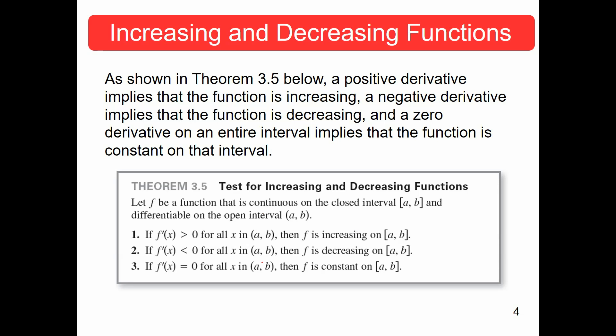We can now state: if we know that there is an interval where f prime is greater than zero, then f is going to be increasing on that interval. If f prime is less than zero for all the x's in that interval, then f is decreasing. And if f prime is equal to zero for all the x's in that interval, then f is constant on the interval.